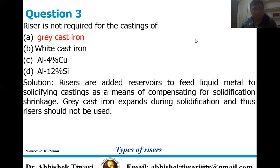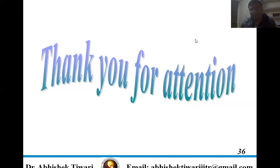Question 3 — Risers are not required for castings of: gray cast iron, white cast iron, aluminium 4% copper alloy, or aluminium 12% Si alloy? Risers are added as reservoirs to feed liquid metal to solidifying castings as a means of compensating for solidification shrinkage. In gray cast iron, it actually expands during solidification, and thus risers should not be used. So the correct answer is gray cast iron. Thank you for your attention.